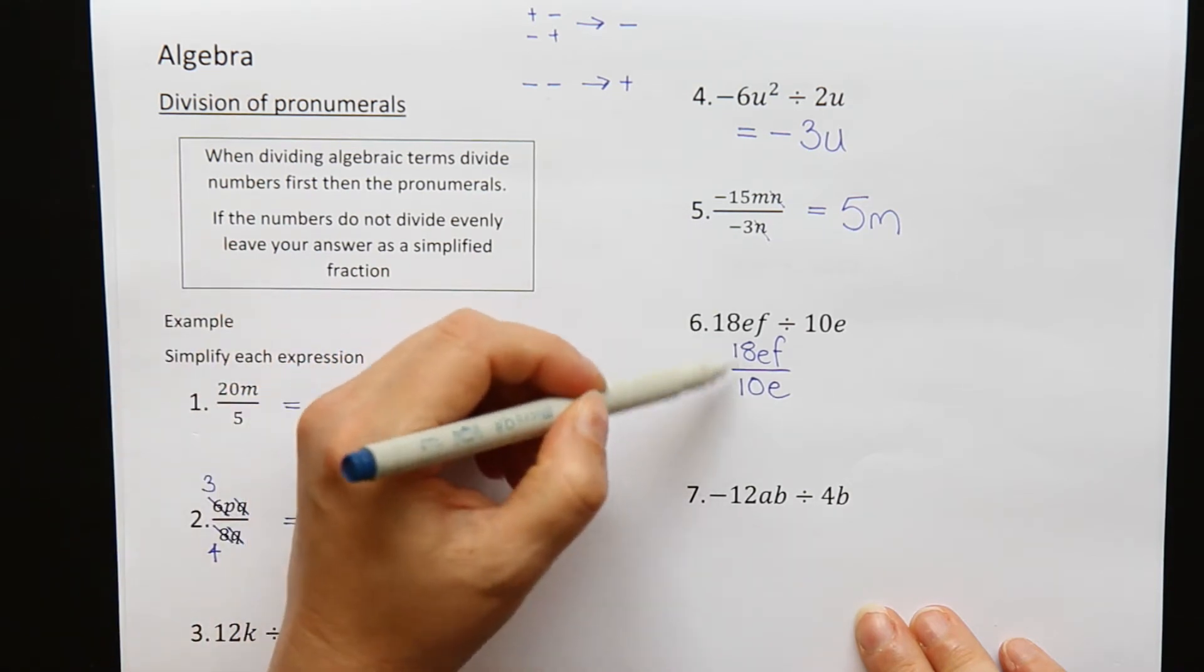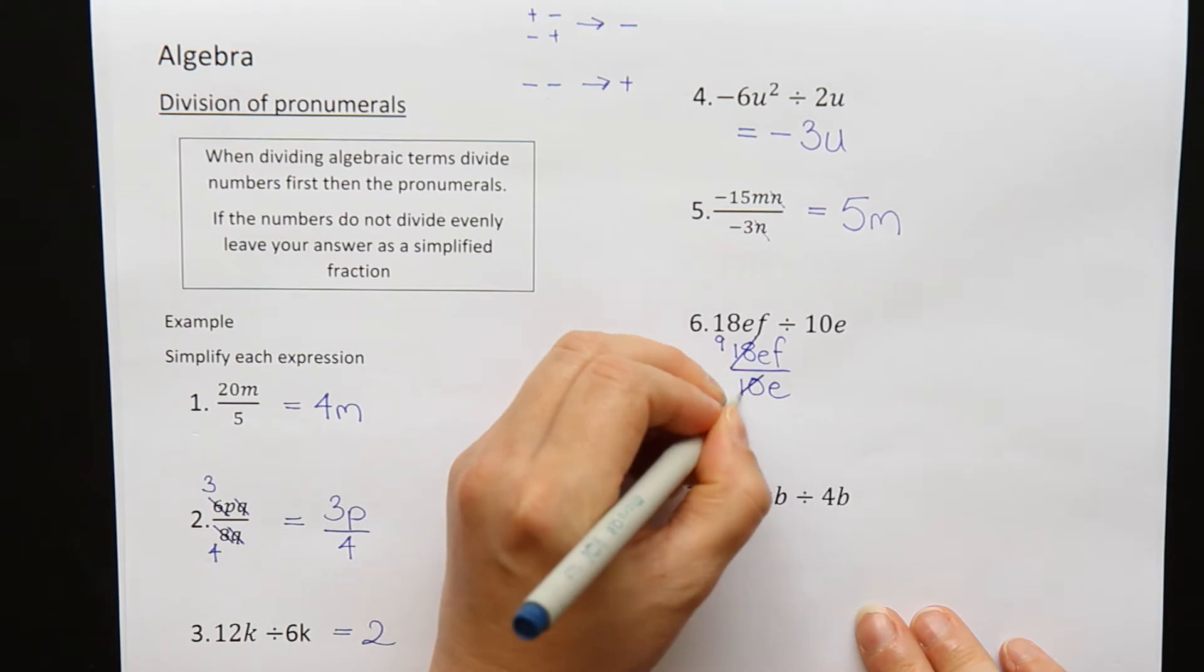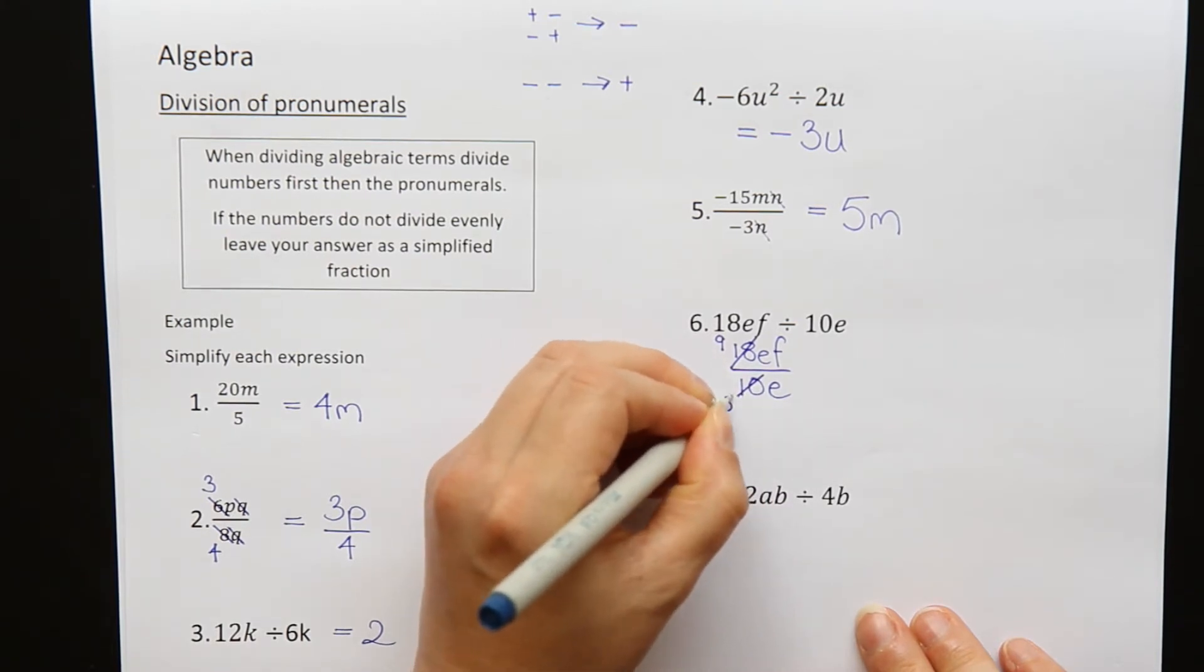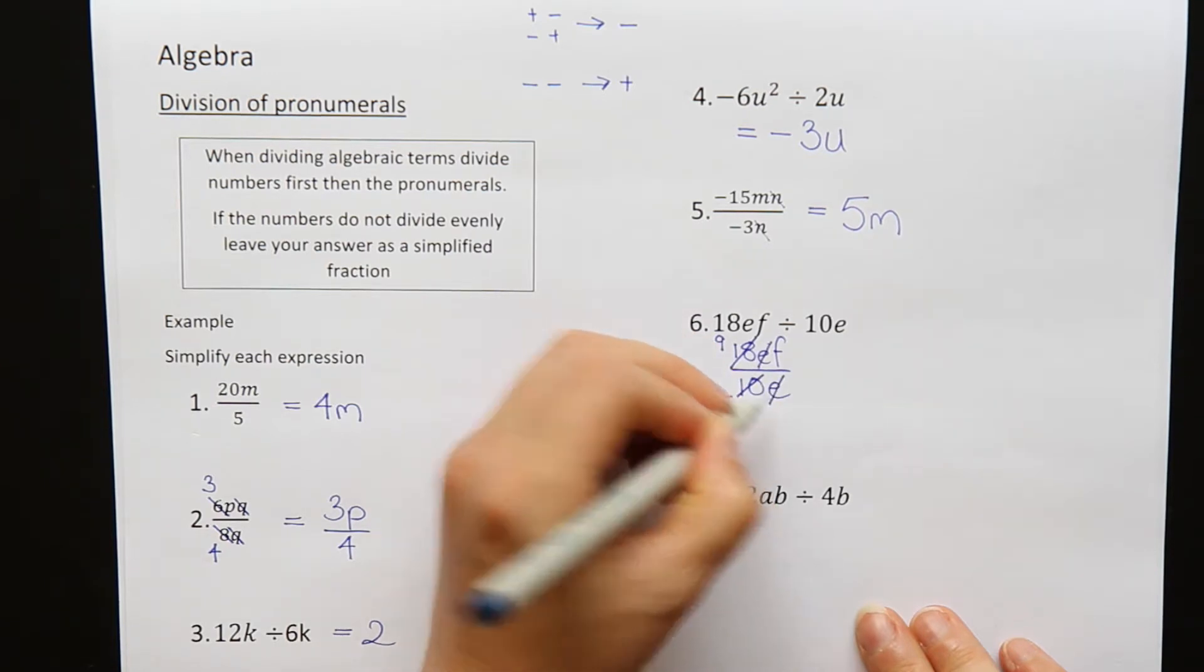So 18 and 10, I could divide them both by 2. Divide 18 by 2, cross it out, I would get a 9. Divide 10 by 2, I would get a 5. Letters can also be cancelled out. I can cancel an E here and an E on the bottom.